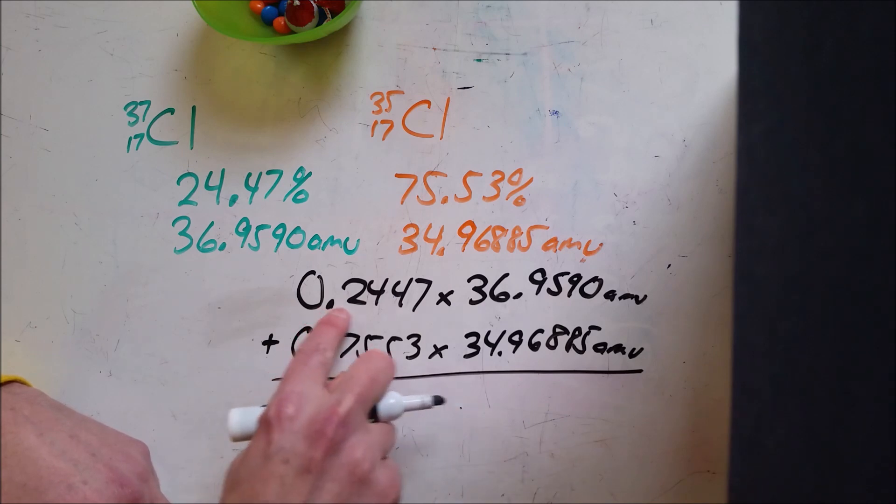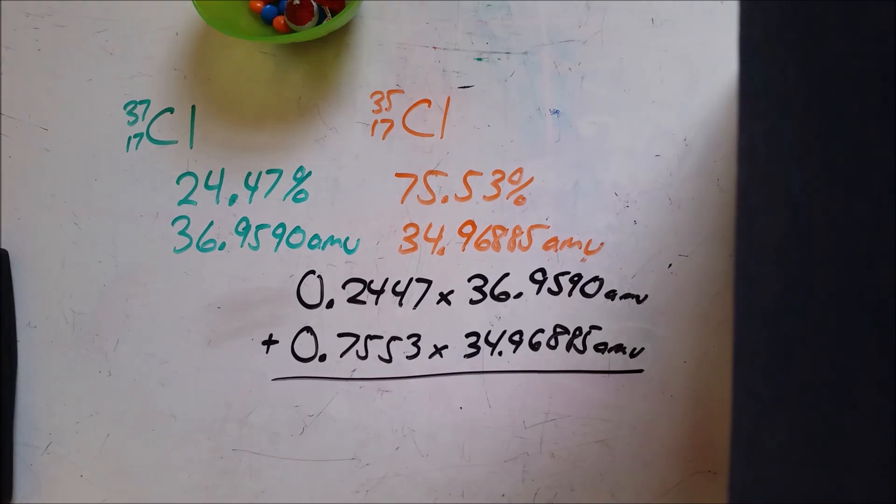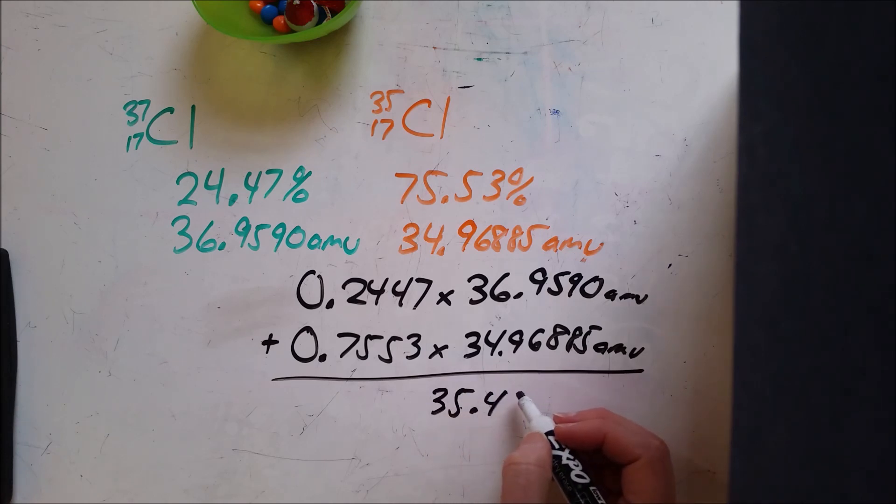So I would get a relative mass for each of these. This one being a little bit larger because this occurs more frequently. So when I sum those together, I end up with 35.455, and I'm going to round that last one to a 6.